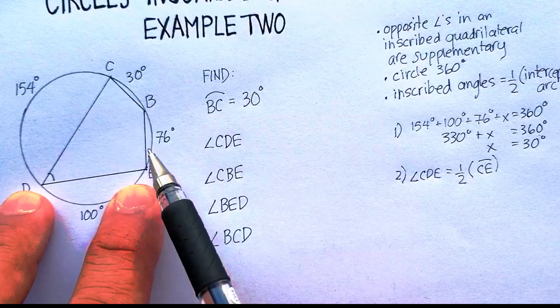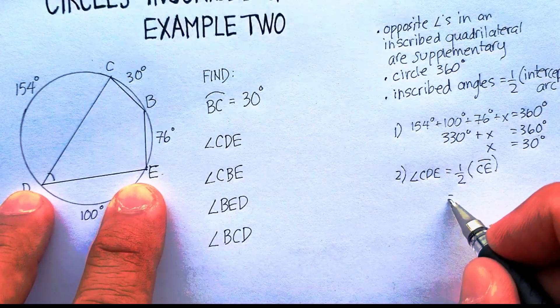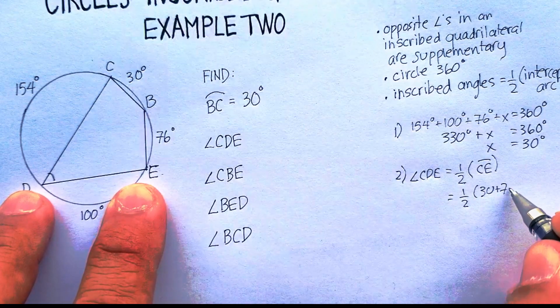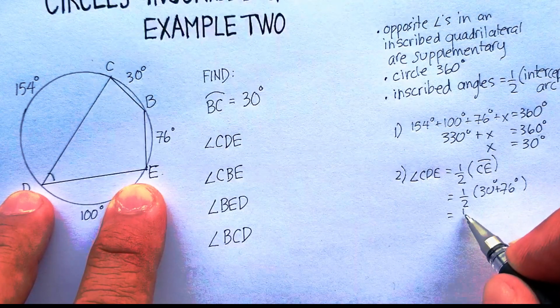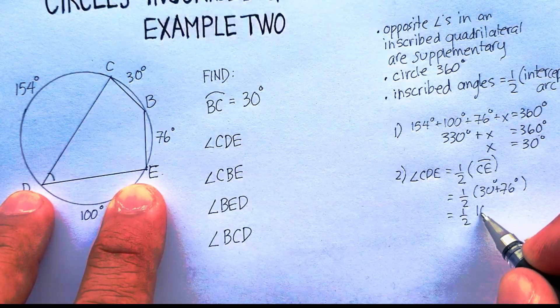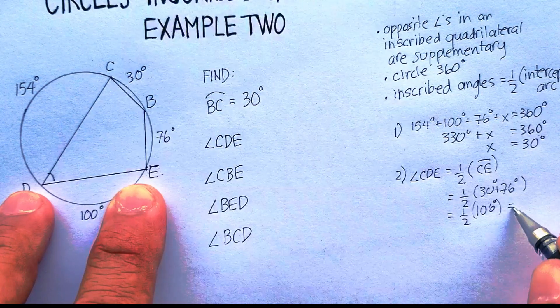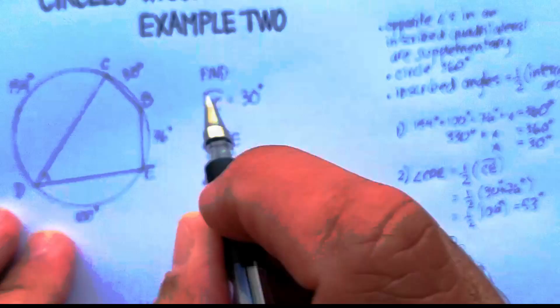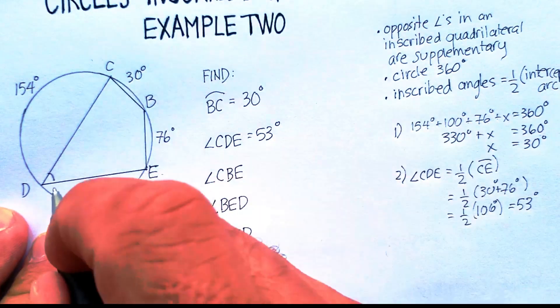Now, C all the way to E is 30 plus 76. So that's going to be one half times 106 degrees. And that's going to be equal to 53 degrees. So angle CDE is 53 degrees.